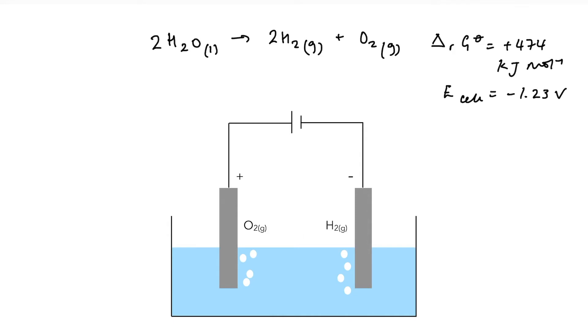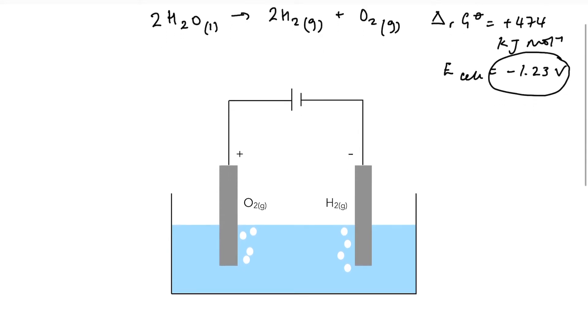However, what this number here does tell me for E cell is that if I provide more than 1.23 volts to this reaction, I can make it happen. And that is what we're doing in electrolysis. We are using the energy and electricity to drive non-spontaneous reactions.